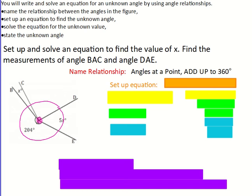And keep in mind for this example, when you see that square in the corner for angle CAD, that's a 90 degree angle. That's just a right angle. So I have x plus 5x plus 90 plus 204. And I'm going to set it equal to 360.